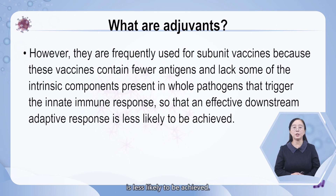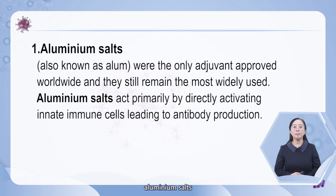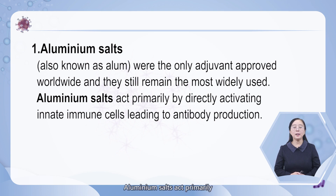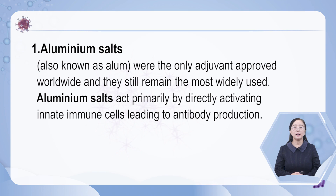For almost a century, aluminum salts, also known as alum, was the only adjuvant approved worldwide, and they still remain the most widely used. Aluminum salts act primarily by directly activating innate immune cells, leading to antibody production.